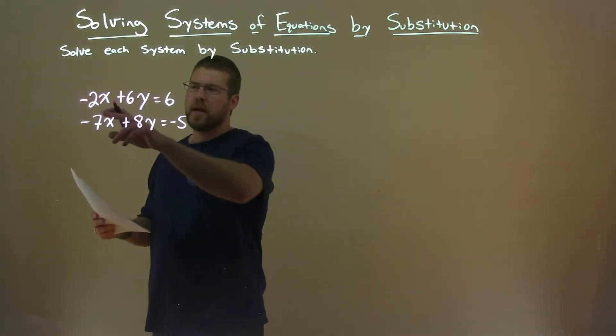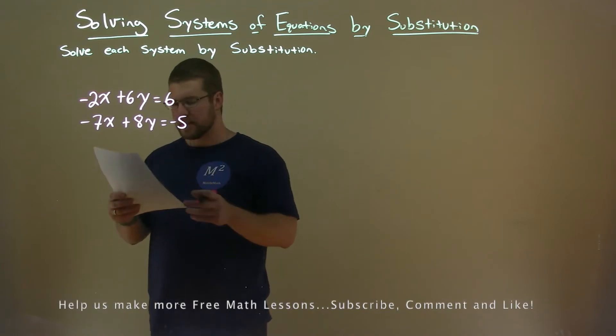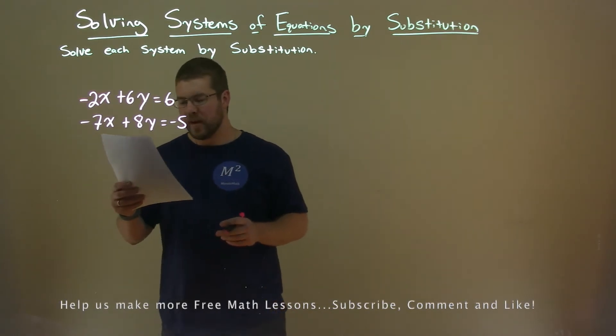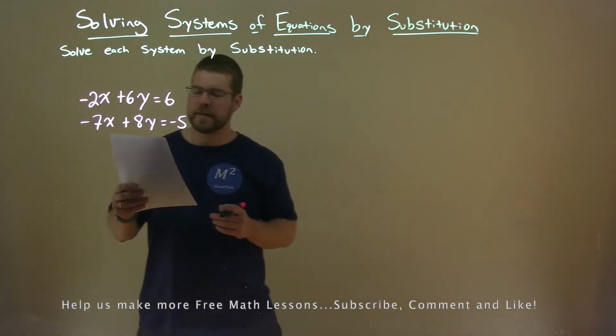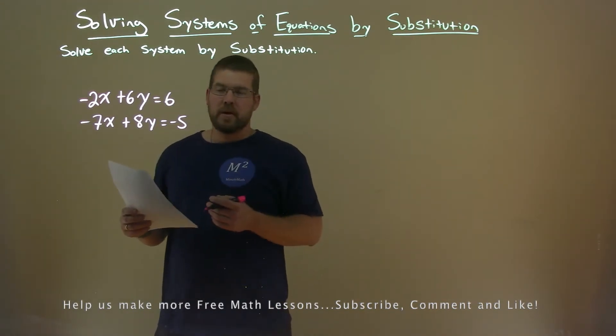We're given these two equations: negative 2x plus 6y equals 6, and negative 7x plus 8y equals negative 5. And we want to solve this system by substitution.